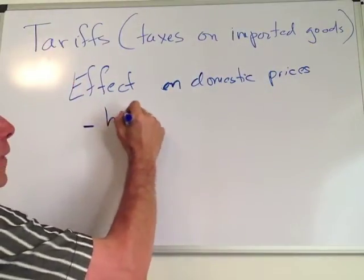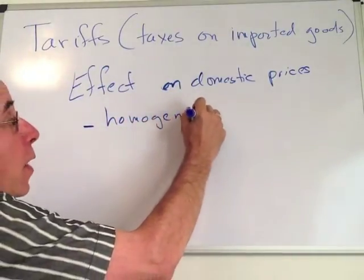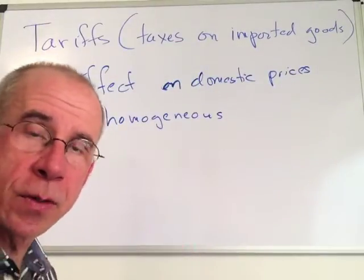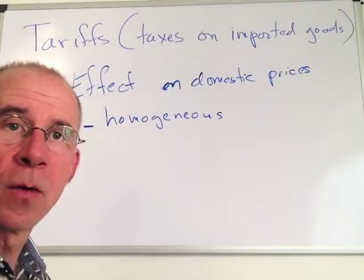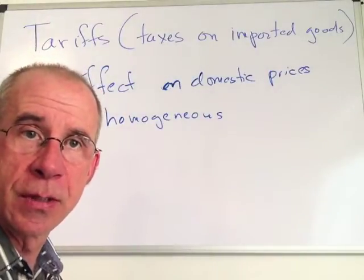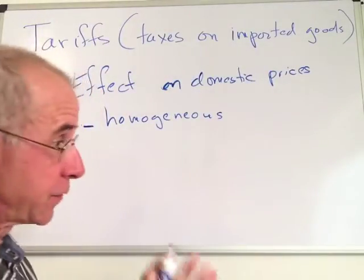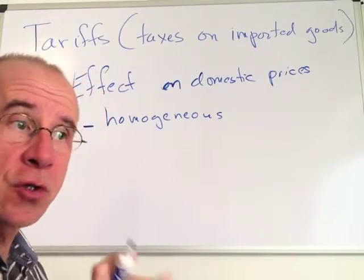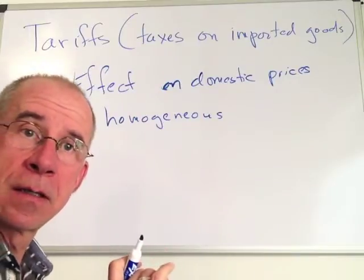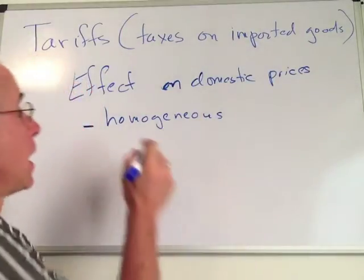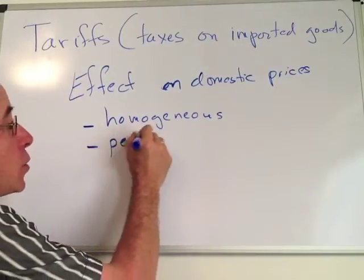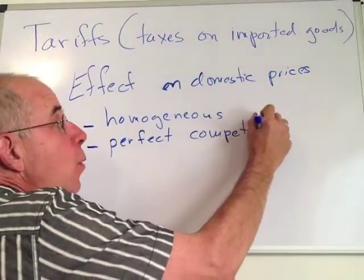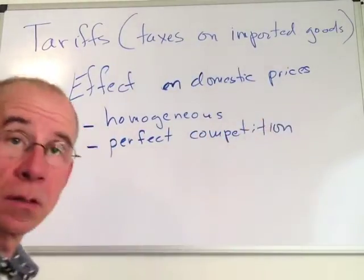Let's think of a simple example where the product is a homogeneous good — that is to say, a consumer has no way to tell whether the product was produced in the foreign market or the domestic market. As far as the consumer is concerned, it's the same thing, so their choice is determined strictly on price. We'll also talk about a situation with perfect competition, though we'll relax that assumption in a moment.